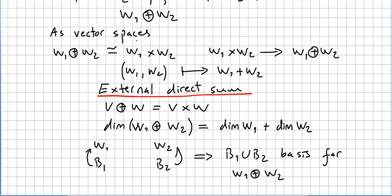Now speaking from the point of view of vector spaces, the direct sum W_1 ⊕ W_2 is isomorphic to the product. This isomorphism is given by (w_1, w_2) mapped to w_1 + w_2. So as vector spaces this sum is given by this map.